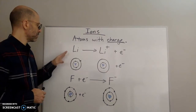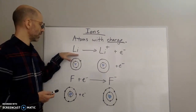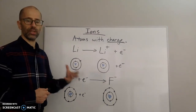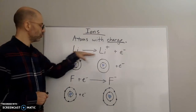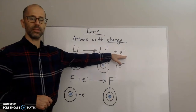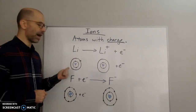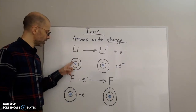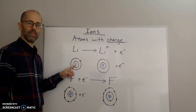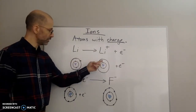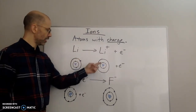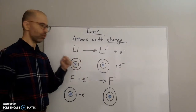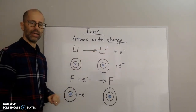You can have an element that loses an electron. Here we have lithium. Lithium is a metal, and metals tend to lose electrons. So here lithium is losing an electron, and now it has a positive charge. That positive charge comes from the unbalance of protons and electrons. In the neutral atom, we have three electrons and three protons — balanced charge. Lose one electron, and now you only have two electrons and three protons, so the overall charge is positive one on the lithium ion.